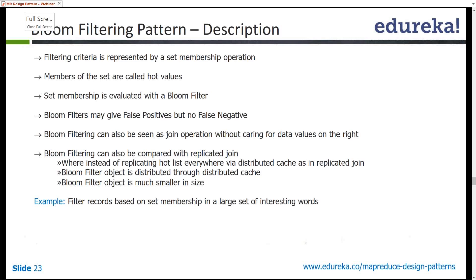Bloom filter actually helps there. Bloom filter helps by maintaining a set membership. The records which have to be filtered in are actually part of a set, and anything which is part of this set is called hot values. Now you might say why is bloom filter required for that purpose, because you could use anything for that — you could use a regular set, put 50,000 records into that set, and just compare against it. Why bloom filter? The good thing about bloom filter is it takes much lesser space than a normal set of records would cost you.